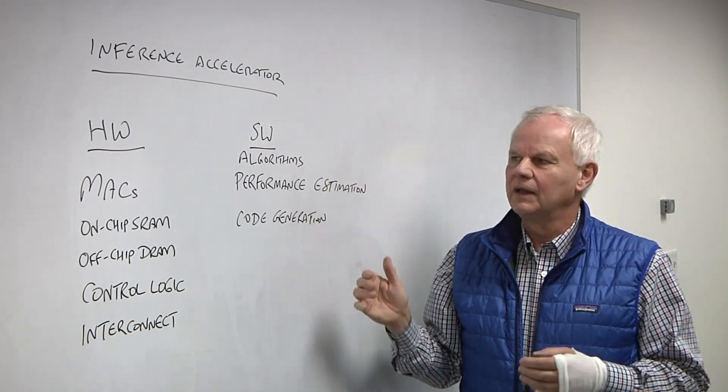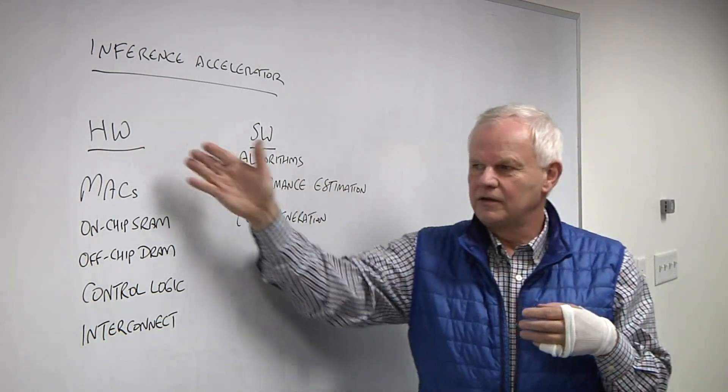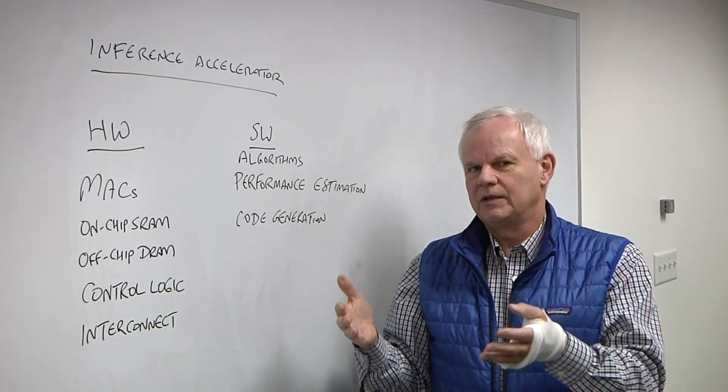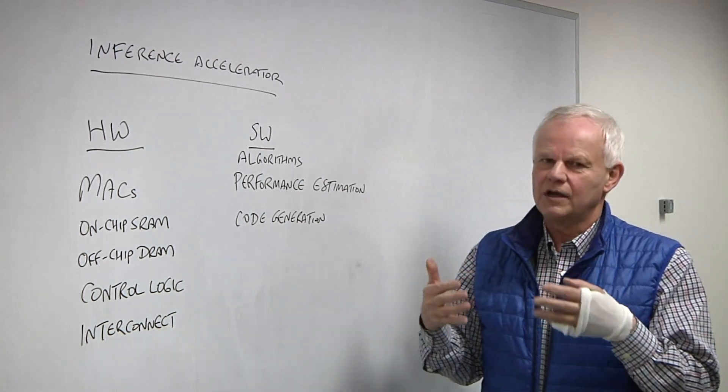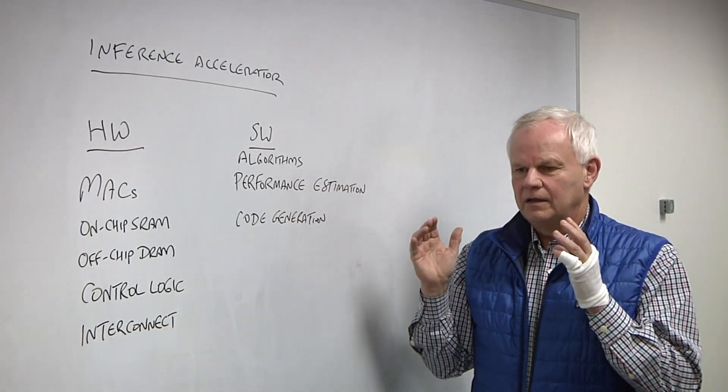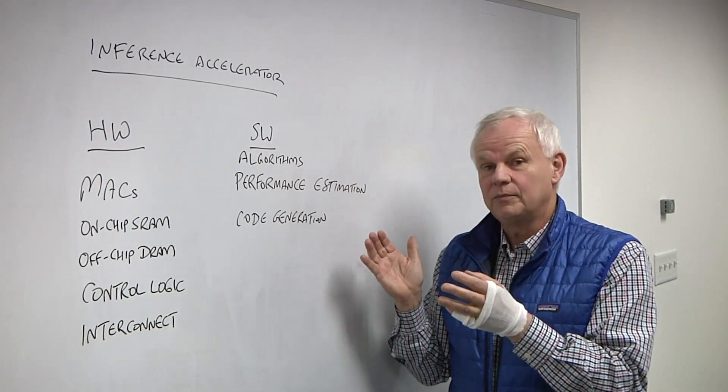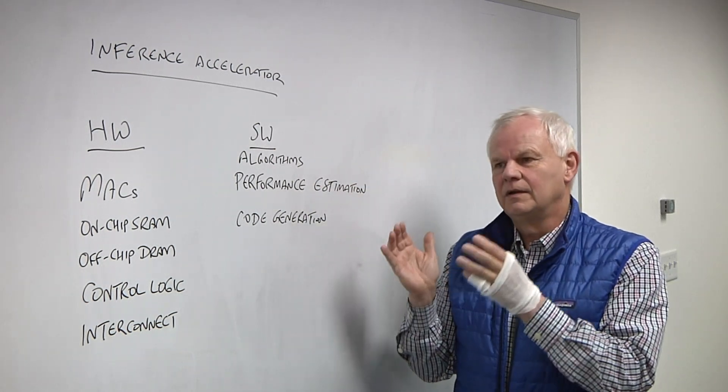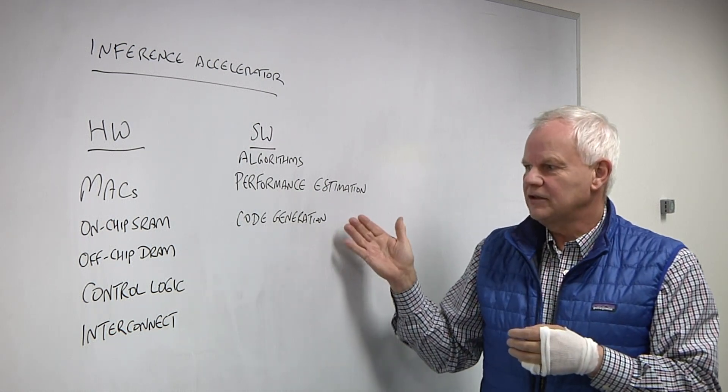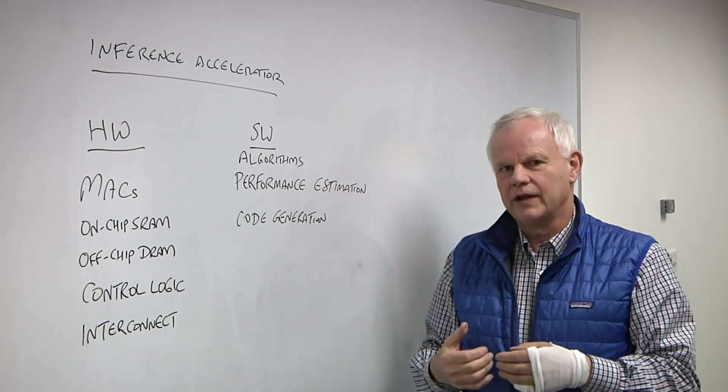All of everybody's software is going to have to do at least a few steps. They're going to have to have an algorithm. The algorithm, basically, is how do I take the neural network model and then orchestrate these resources to keep them as busy as possible while completing the computation in the shortest time and the shortest power. The next is performance estimation. And last is actually generating the code that actually gets loaded onto the processor to run it.